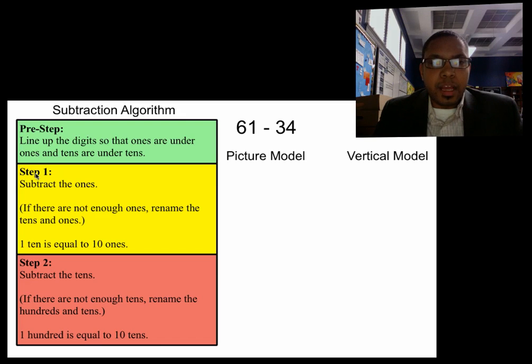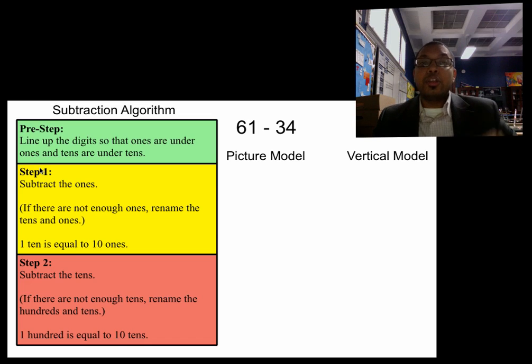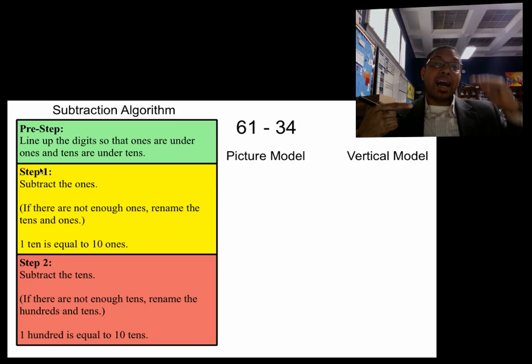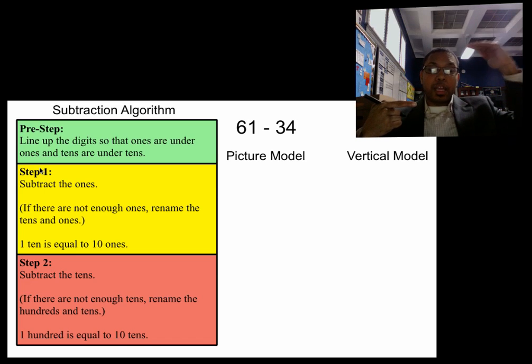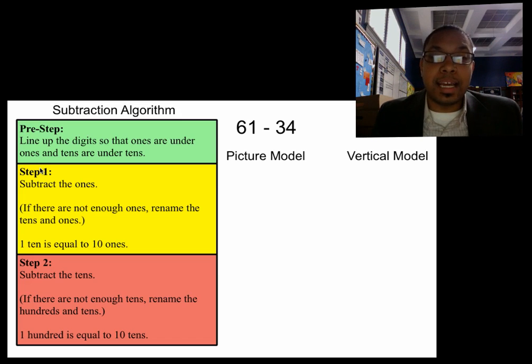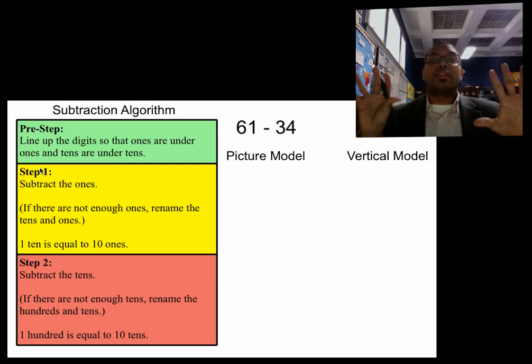Next, after that, once you've set up your problem, then you follow the first step. Step one says to subtract the ones. So you're going to look at the number that's right on the same line as the subtraction sign and subtract those number of ones. Now, if there are not enough ones, you're going to have to rename the tens and the ones. And one fact to remember is one ten is equal to ten ones.